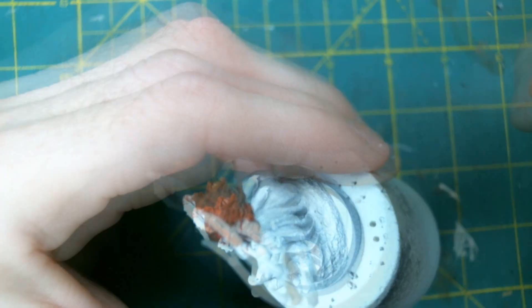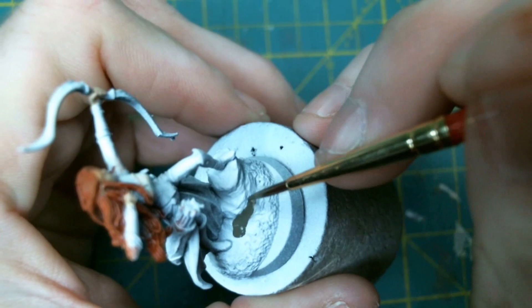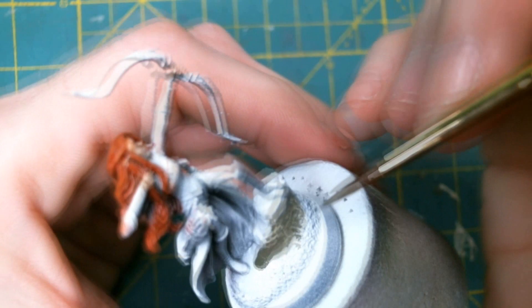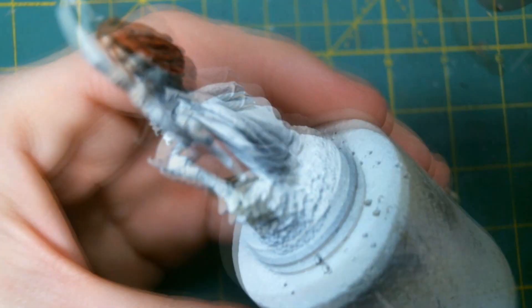From there I moved on to starting work on the base. And so I started with the rock because again there'll be dry brush going on. So for the rock I started with Vallejo German Field Gray. And from there I did a wash of Vallejo European Dust.